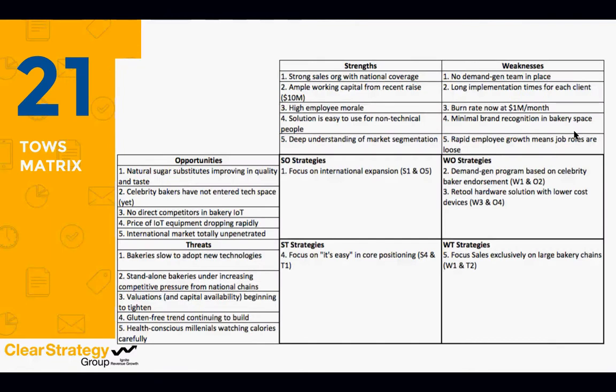In reality this is probably an hour or two of your team brainstorming, breaking into groups, and coming up with ideas — maybe using the meta-planning method to winnow down the list. Here's what the Warbly team came up with. For example, combining Strength 1 — a strong sales org — with Opportunity 5 — the international market — we get the strategy: focus on international expansion. The team is distributed around the U.S. and could theoretically leverage that strong, knowledgeable sales force to take on the international market opportunity.